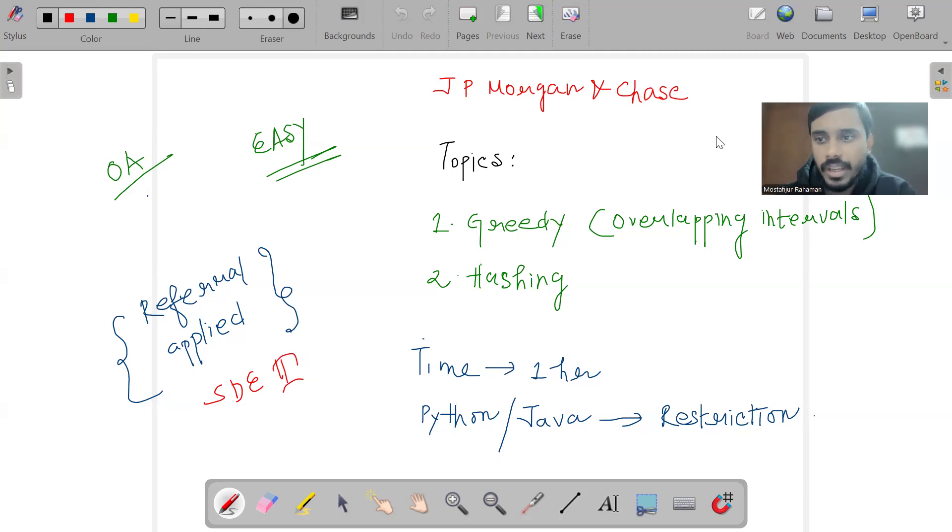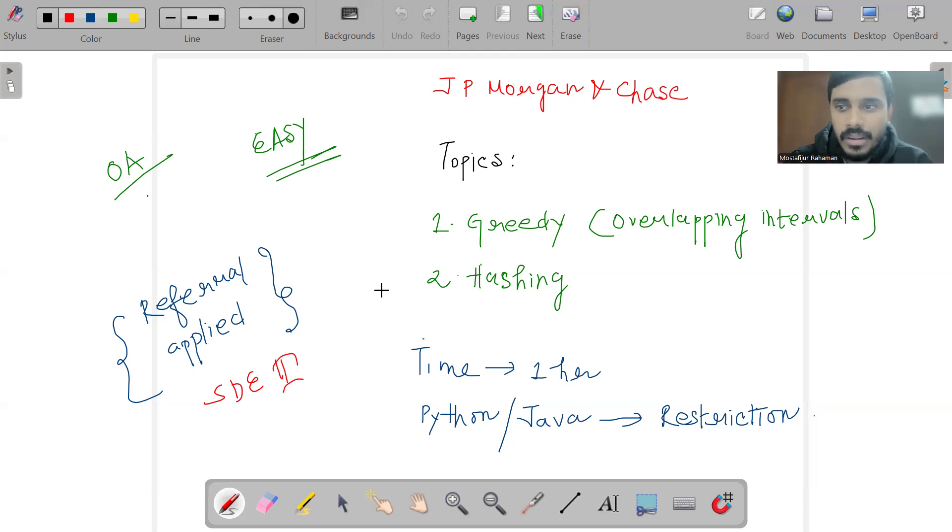I'll start with JP Morgan Chase. I applied with the help of a referral from my senior for the SDE2 position. Overall, if I rate the exam, it was at the easy level and was basically two coding-based problems on the HackerRank platform.